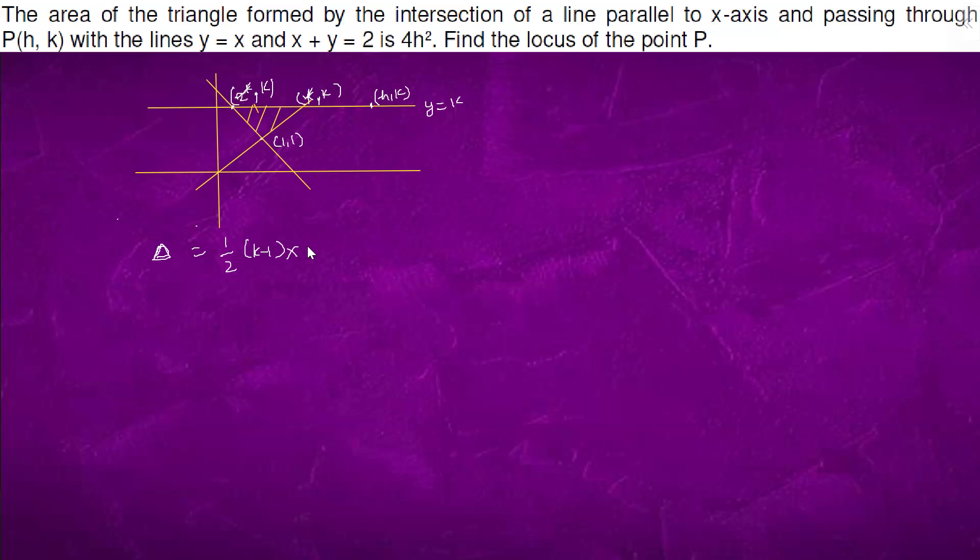So the base is 2 minus 2k, which equals to 4h squared. And we have this mod, isn't it?